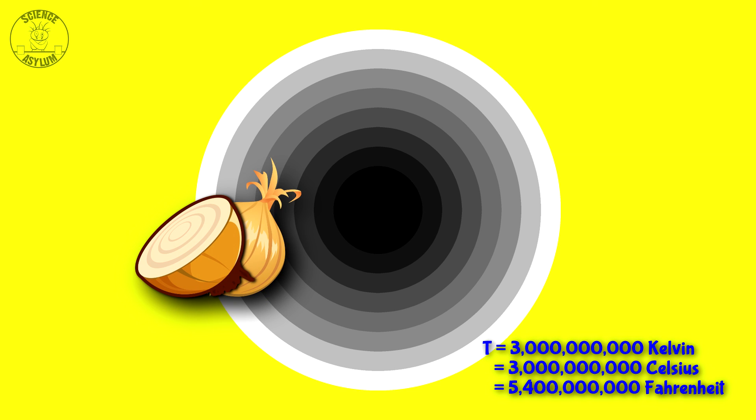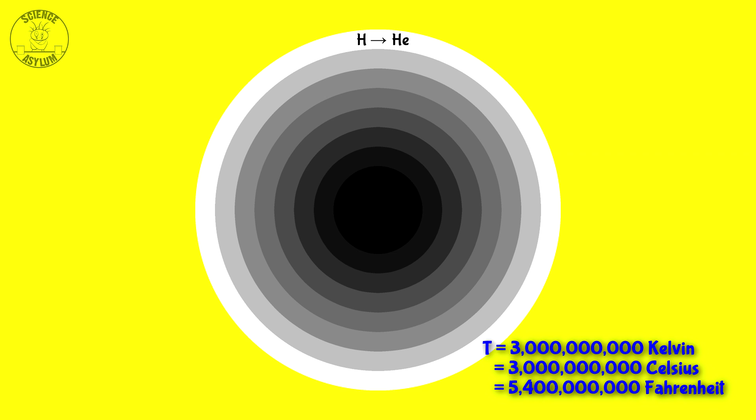It kind of looks like an onion with all its fusion layers. Hydrogen into helium, helium into carbon, carbon into oxygen. Each step inward creating bigger and bigger atomic nuclei. All releasing energy in the process. Until we get to iron anyway.